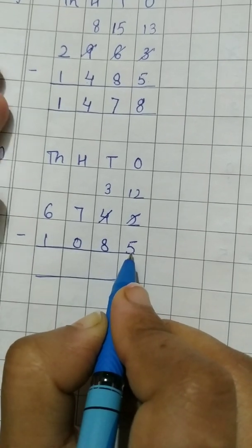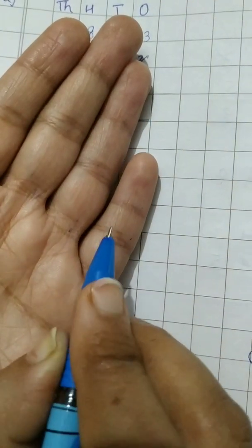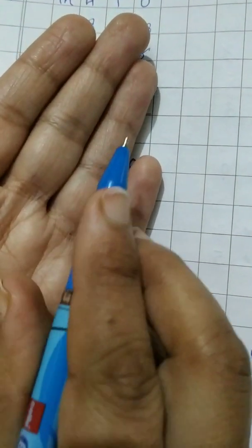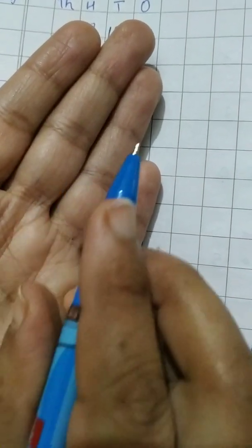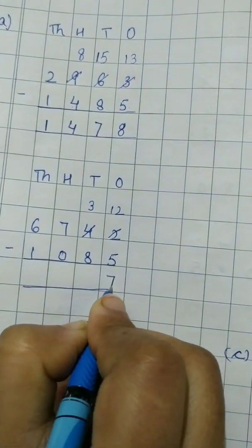We have to go from 6 now. 6 to 12. Let us count. 6, 7, 8, 9, 10, 11, 12. 1, 2, 3, 4, 5, 6, 7. 12 minus 5, 7.